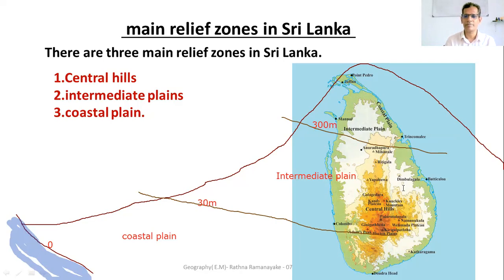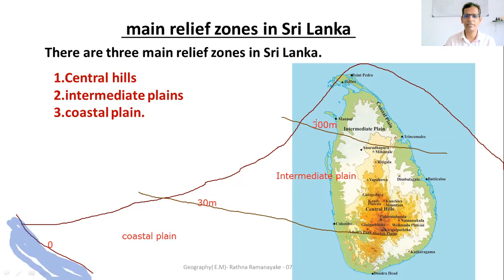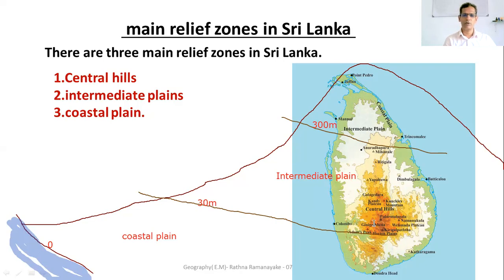The land area over 300 metres — here you can see Kandy and other districts — belongs to Central Hills.